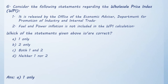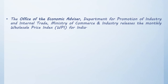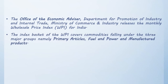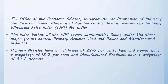The Office of the Economic Advisor, Department for Promotion of Industry and Internal Trade, Ministry of Commerce and Industry, releases the monthly Wholesale Price Index for India. The index basket covers commodities falling under three major groups: primary articles (weightage of 22.6%), fuel and power (weightage of 13.2%), and manufactured products (weightage of 64.2%). Fuel and power is indeed included in the WPI calculation, making Statement 2 incorrect.